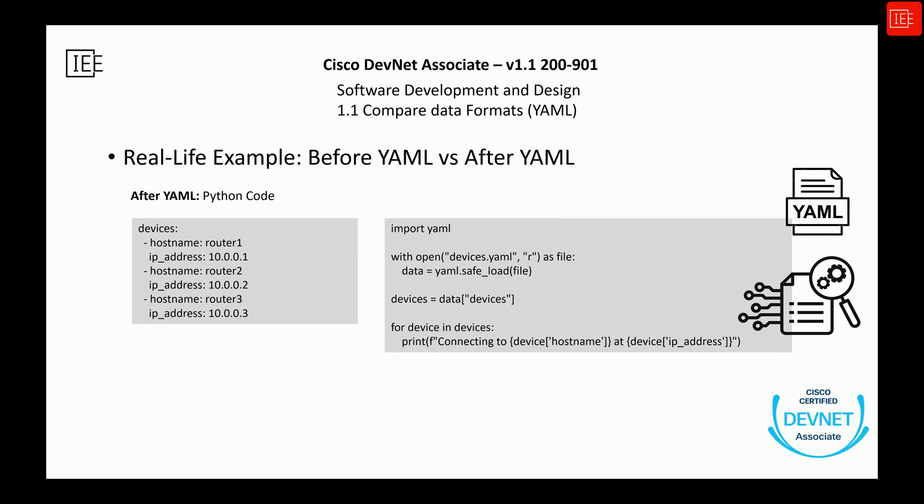Instead of hard-coding, you can move the device data to a YAML file — let's say a file called devices.yaml — and your Python code becomes much cleaner. Now, if you want to add a device, you only edit the YAML file, not the Python script. If your customer or colleague wants to change devices, they don't even have to know Python. Your code becomes more flexible, reusable, and professional.